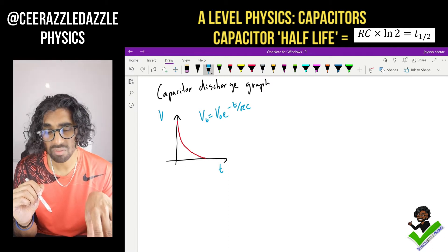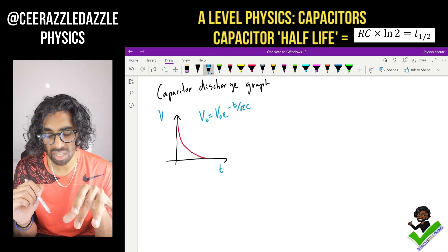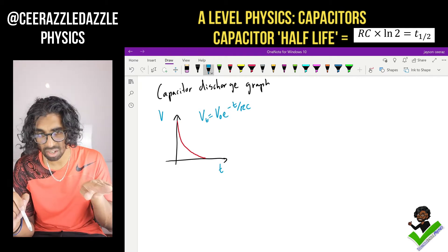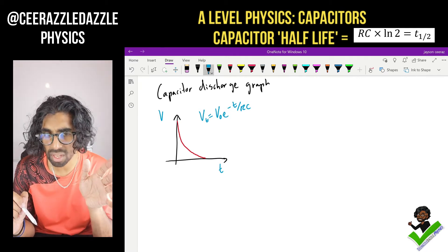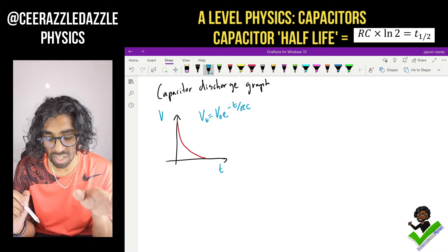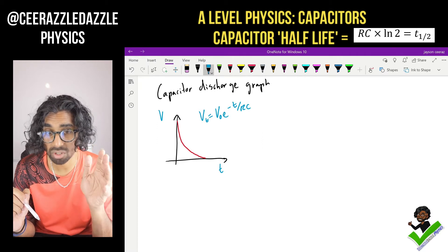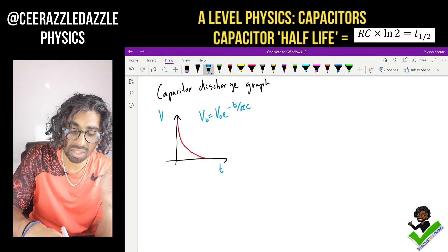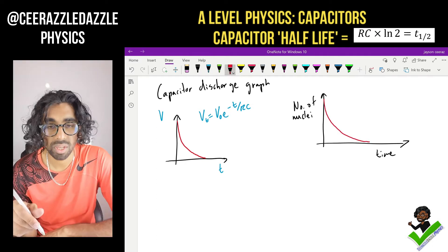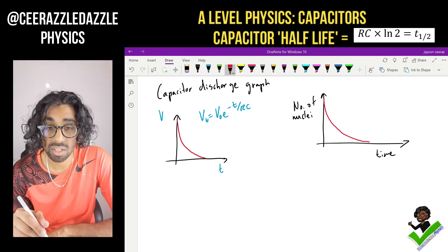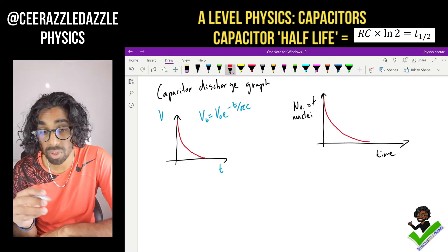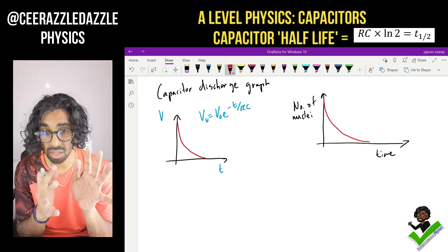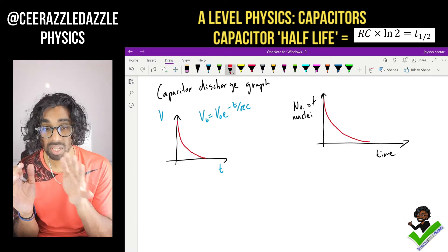This is very similar to something we did in GCSE. What graph do we have in GCSE in which there is a nice decay curve? Well hopefully we can remember that we covered it in the nuclear physics topic. In the nuclear physics topic we have a similar graph — the nuclear decay graph. If we were to plot a graph of the number of nuclei against time, we will notice there will be a decay.